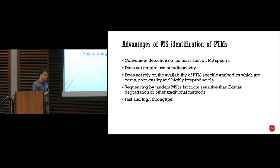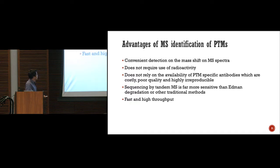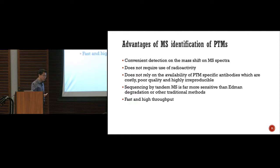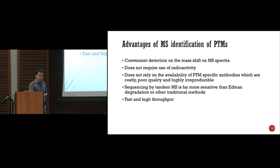Rather than going into the specifics of each PTM, I'd like to look at the general strategy to analyze PTMs. The first approach is easy: you can look at the mass shift. Early discoveries of new PTM changes were sometimes purely by accident — you look at the shift on the mass spectrum and find a new modification. Before mass spec, you had to use methods like radioisotopes. With mass spec, you don't need those — you just look at the mass changes. That's the absolute advantage of using mass spec for PTM analysis.